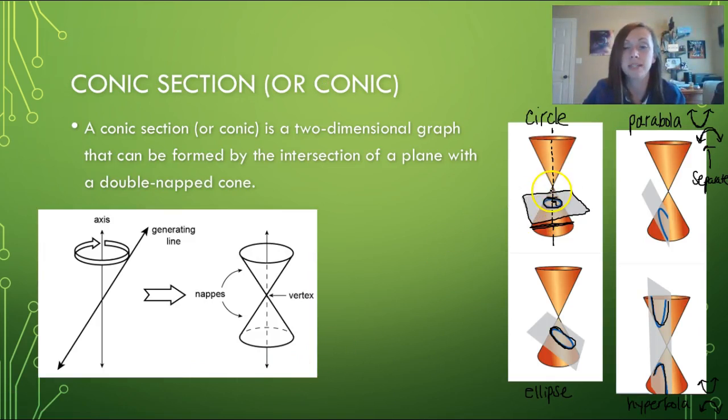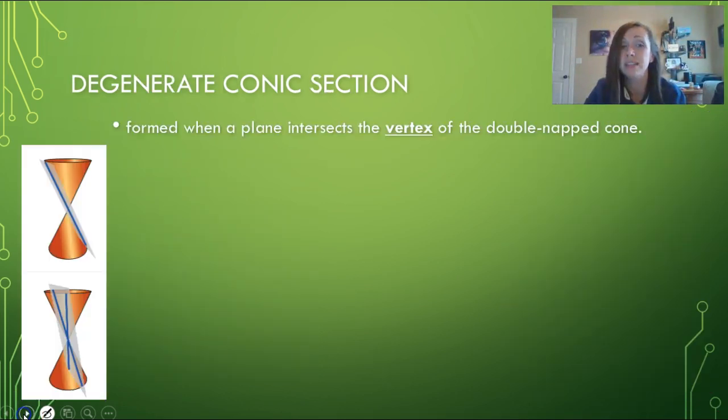If we go back we see none of those planes intersected the vertex. The vertex occurs where the two cones meet, so none of our planes intersected that vertex. If it does, then that is going to be called a degenerate conic section.